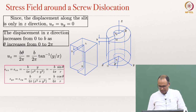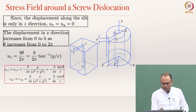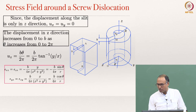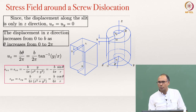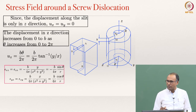For the stress field around a screw dislocation: since it is a screw dislocation, there is no displacement in x and y directions, so u_x = u_y = 0 and u_z = b·θ/(2π), because b is your Burgers vector. Starting at zero and going around 2π, displacement goes from 0 to b — like going around a parking garage to reach the next floor. So u_z can be written as b·θ/(2π), or in terms of x and y equivalently.